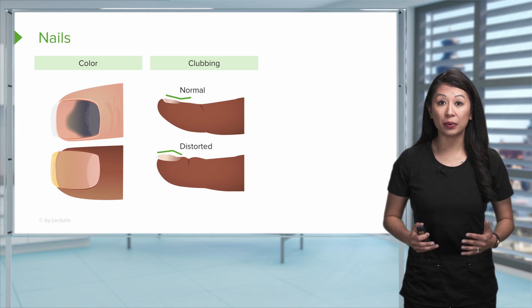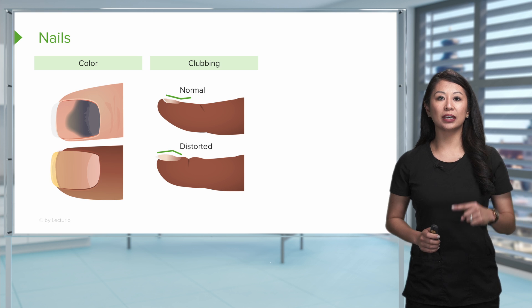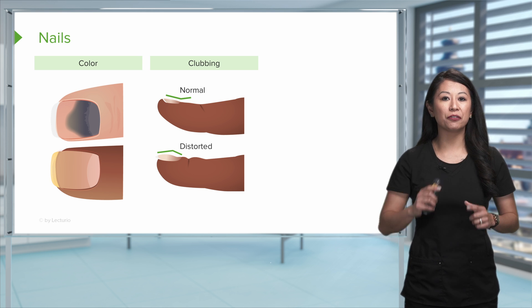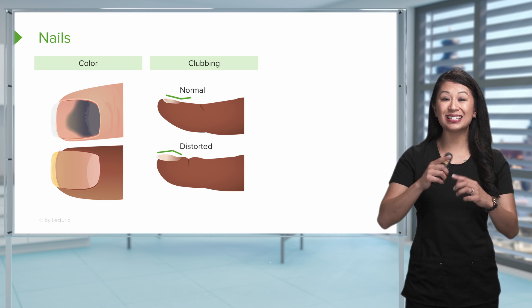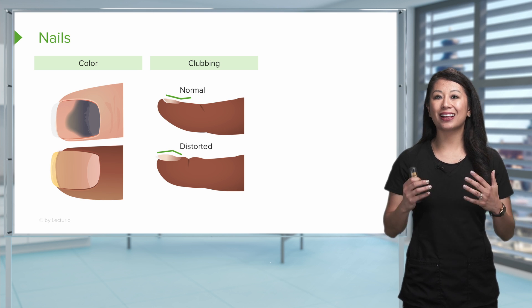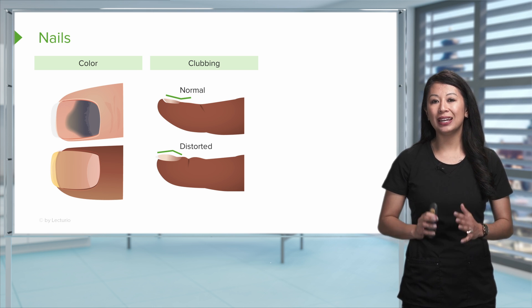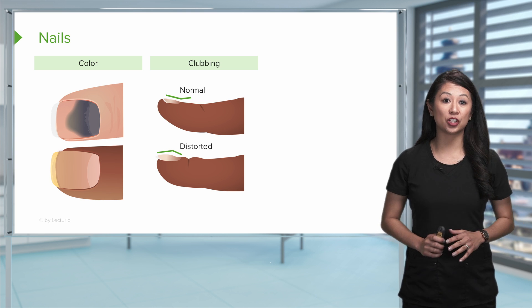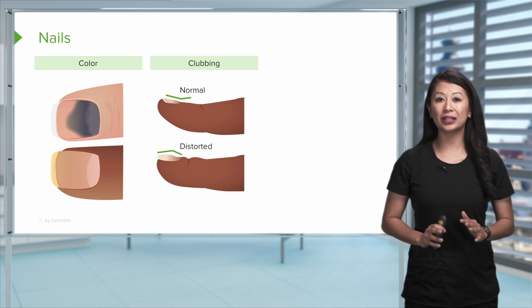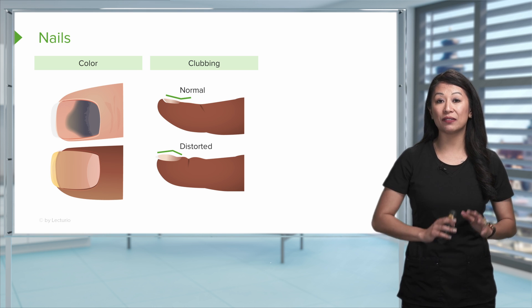In the middle of this slide, you see what we call clubbing. You see how if you look at the nail, it's normal, it's pretty flat, but if you see this distorted kind of a raised nail bed, we call that clubbing, and that usually indicates that the patient has had long-term oxygenation issues. This is commonly going to be seen with our patients who have COPD.